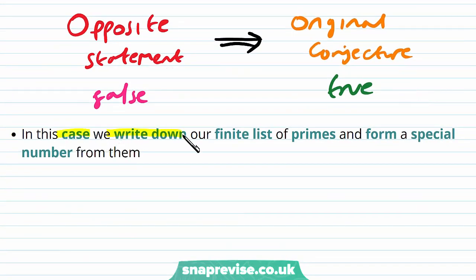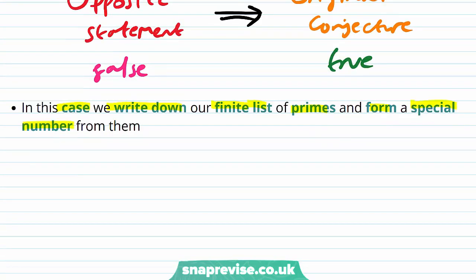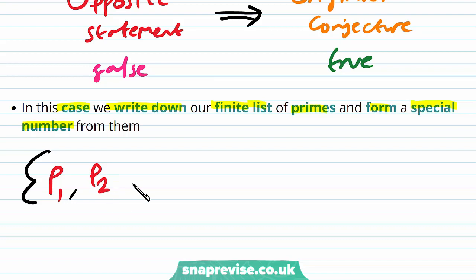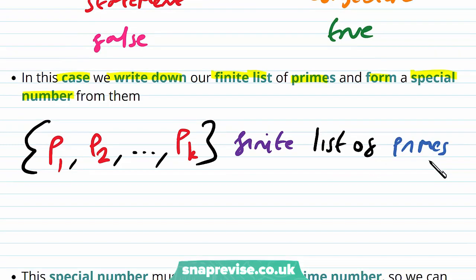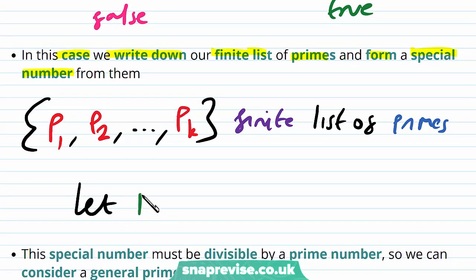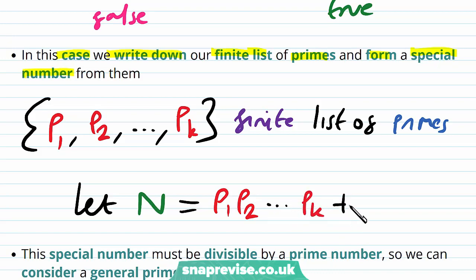In this case, we write down our finite list of primes and form a special number from them. We are considering our opposite statement, i.e. that there are finitely many primes. So we have our list of primes: P1 is our first prime, P2 is our second prime, all the way up to our last prime, the kth prime. This is our finite list of primes — no matter how large it is, it's certainly finite by assumption. Then we let capital N be the number formed by multiplying all the primes together, i.e. p1 × p2 × ... × pk, and then we add one.